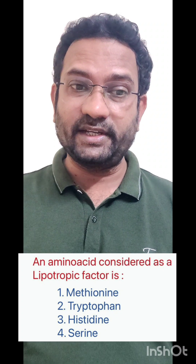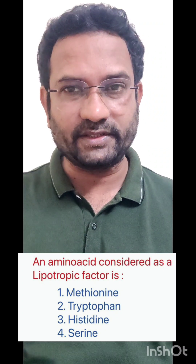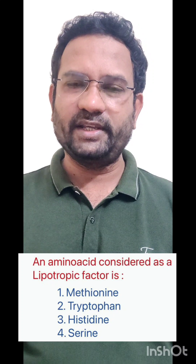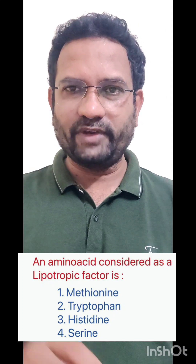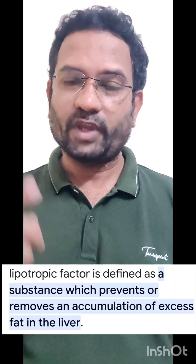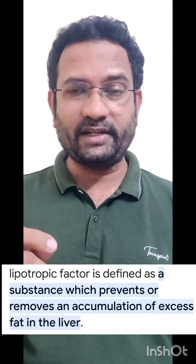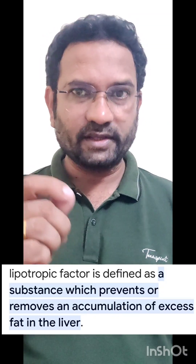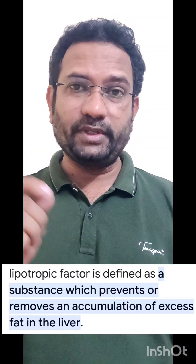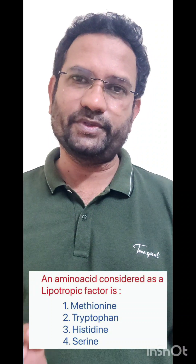Question 2: An amino acid considered as a lipotrophic factor is — options given are methionine, tryptophan, histidine, serine. Now understand this: lipotrophic factor — 'lipo' means lipid, 'trophic' means which increases utilization. A lipotrophic factor is one which prevents or reduces excessive accumulation of fat in the liver. So this factor is used to treat fatty liver disease (FLD). Excessive fat is dangerous to the liver, and to treat that, these factors are used.